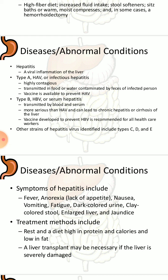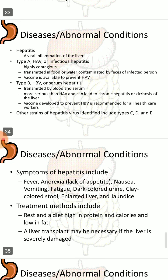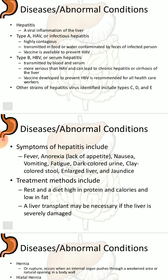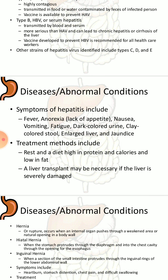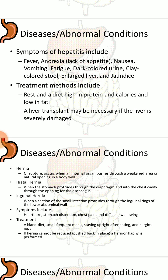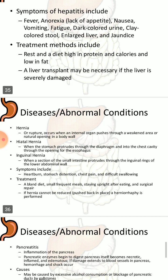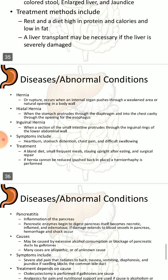Hepatitis is inflammation of the liver. Type A (HAV), or infectious hepatitis, is highly contagious and transmitted through food or water. Type B (HBV), or serum hepatitis, is transmitted through blood or serum and is more serious than Type A; it can lead to chronic hepatitis or cirrhosis of the liver. Other strains identified include types C, D, and E. Symptoms include fever, anorexia, nausea, vomiting, fatigue, dark-colored urine, clay-colored stool, enlarged liver, and jaundice. Treatment includes rest and a high-protein diet; a liver transplant may be necessary if the liver is severely damaged.